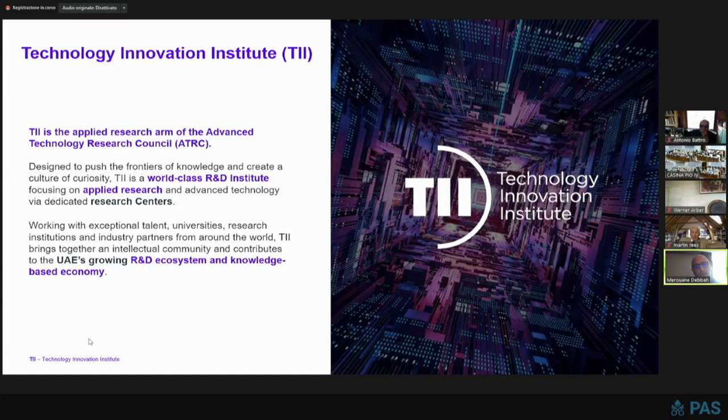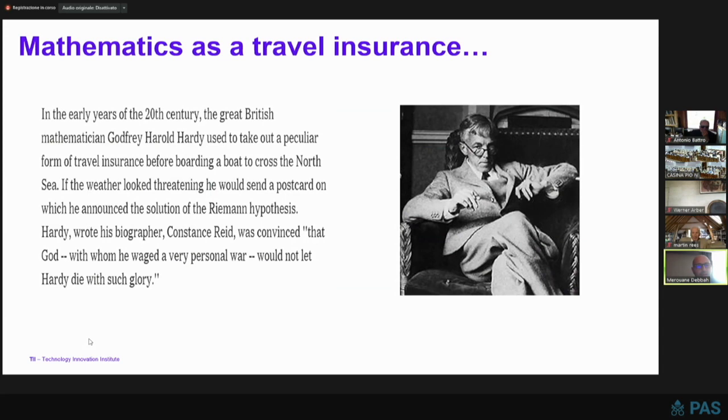Just a little joke as an introduction. Mathematics has much more role than just using an AI. It can be even used as a travel insurance. It's quite known that the great British mathematician Hardy was using it as a trick before traveling whenever the weather was not good, on which he was posting a postcard announcing the solution of the Riemann hypothesis, just in case he could not make it. If he could make it, no problem, he would destroy it. If he did not, people would at least consider that he was the author of this Riemann hypothesis, because God, with whom he waged a very personal war, would not let him die with such glory.